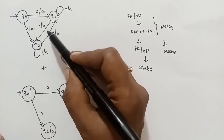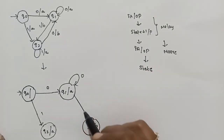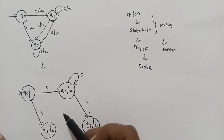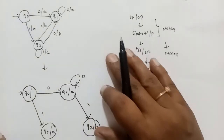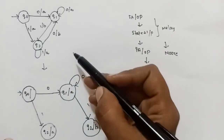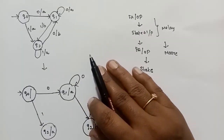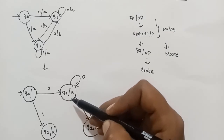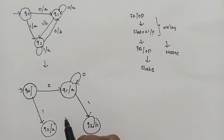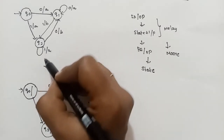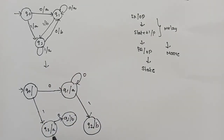Q1 on input 1 goes to Q2 with output B. Q2 on input 1 goes to Q1 with output B. Q2 on input 1 goes to Q2 with output A.